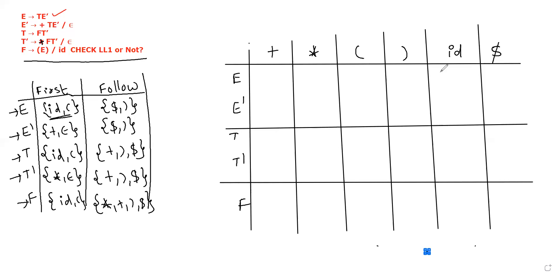LL1 grammar is used to check quality. If we use this, we check quality. First, we do a table — we set this up as a predictive parsing table.